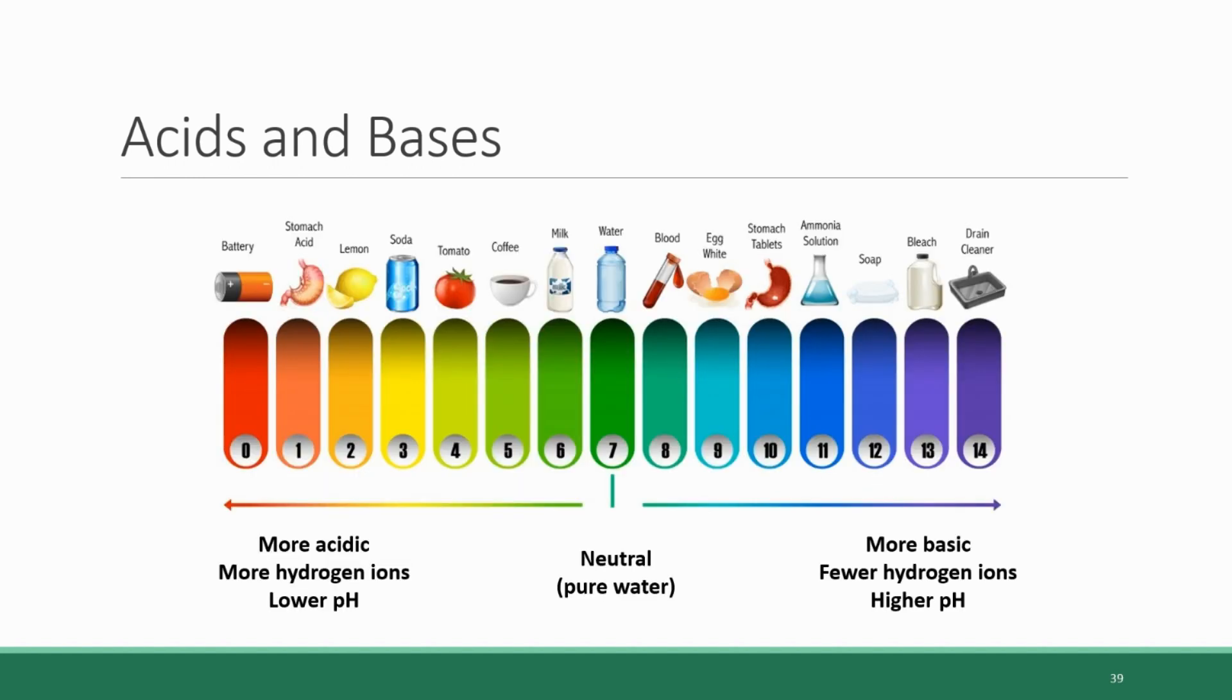Now we know that the pH scale measures hydrogen ions. The scale runs from 0 to 14. Right in the middle of the scale is the number 7, which is the value assigned to pure water. Pure water is considered neutral—it's neither acidic nor basic.